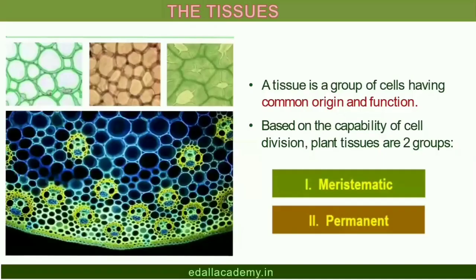6.1 The Tissues. A tissue is a group of cells having a common origin and usually performing a common function. A plant is made up of different kinds of tissues. Tissues are classified into two main groups — meristematic and permanent tissues — based on whether the cells being formed are capable of dividing or not.